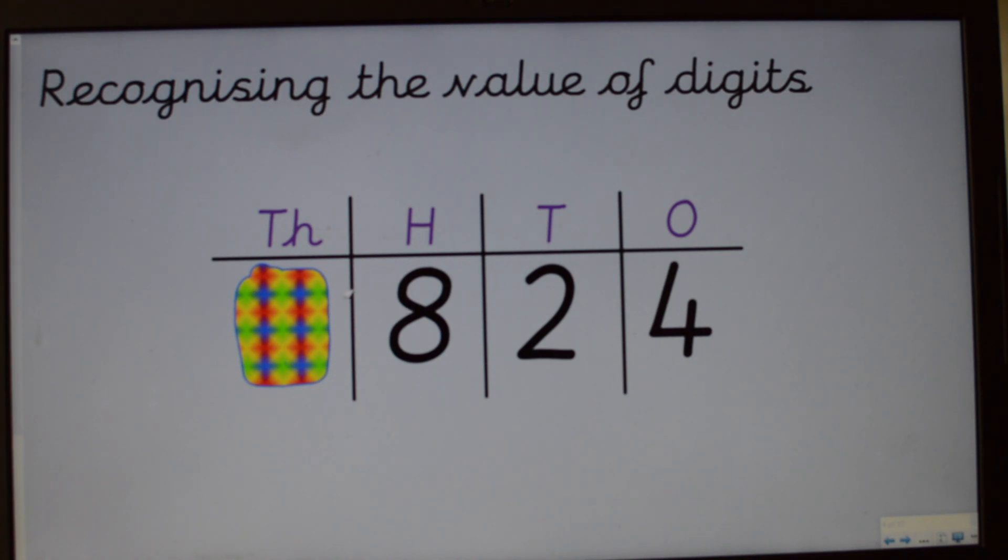Okay, let's remove the last part. Okay, seven thousands, eight hundreds, two tens and four ones makes seven thousand, eight hundred and twenty-four.